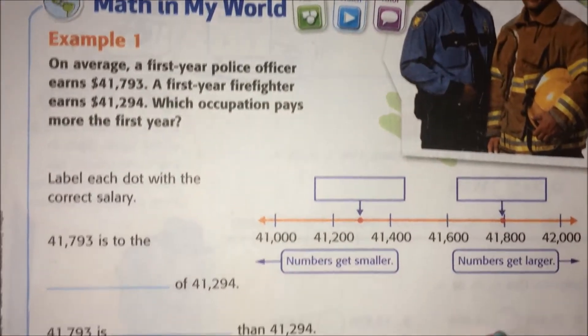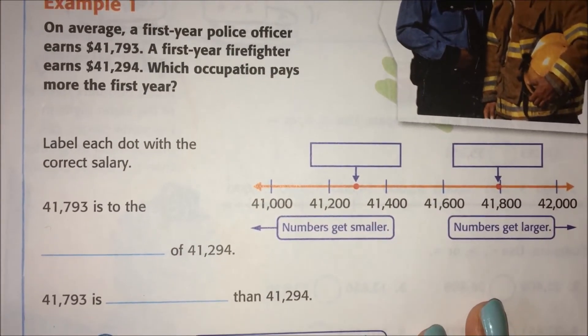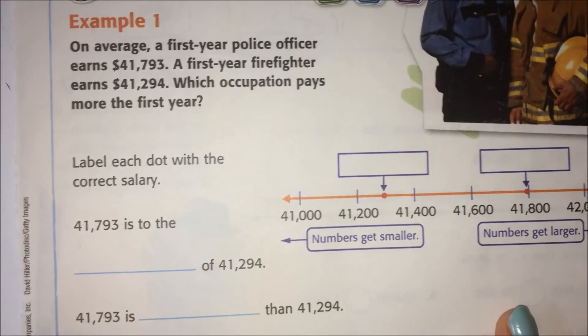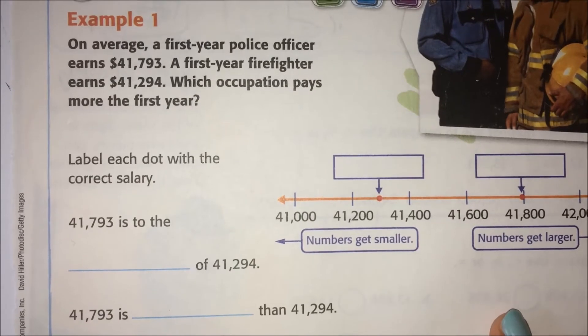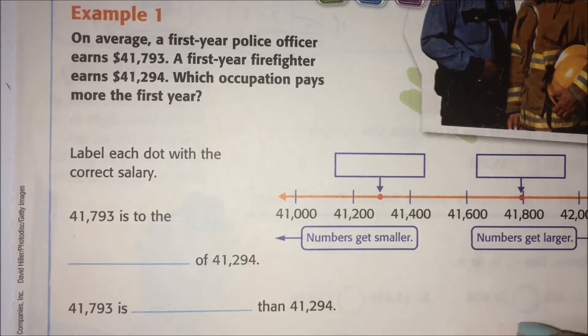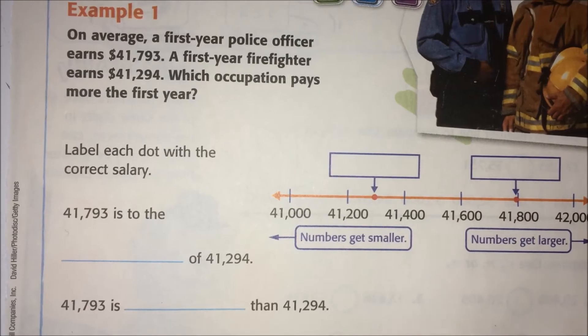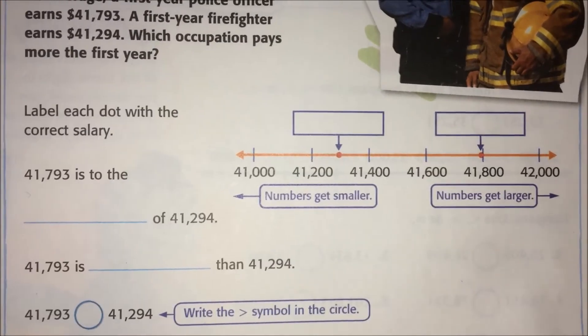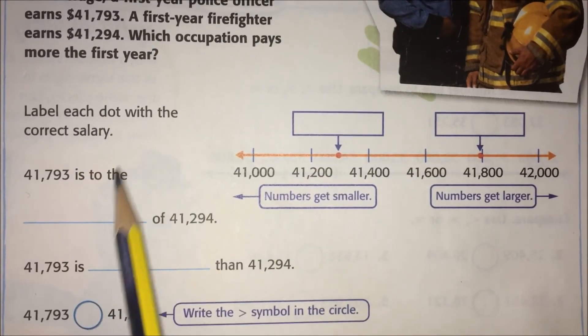Let's get started with the example. On average, a first-year police officer earns $41,793. A first-year firefighter earns $41,294. Which occupation pays more the first year? So what do they want us to do? Label each dot with the correct salary.